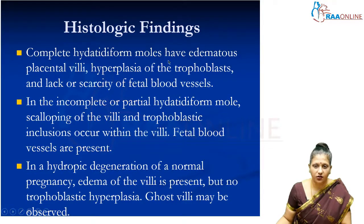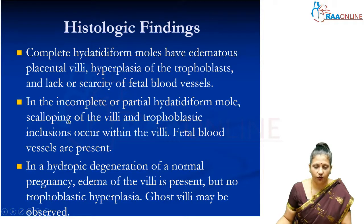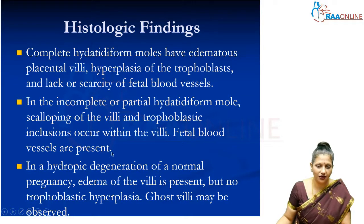Complete hydatidiform moles have edematous or swollen placental villi, hyperplastic trophoblast, and no fetal vessels. In an incomplete or partial hydatidiform mole, there is scalloping — meaning sudden dilatation after a narrow part — trophoblastic inclusions within the villi, and fetal blood vessels are present. The main difference between complete and incomplete mole is the presence of fetal blood vessels in the tertiary stem villi.